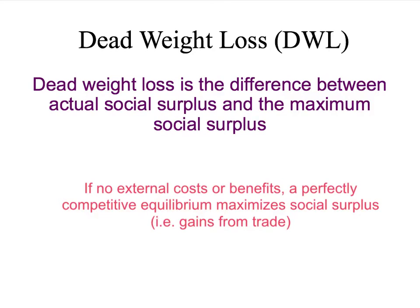In today's example, we're going to start with a simple case where there won't be any external costs or benefits, so our point of comparison is the perfectly competitive equilibrium. Because the perfectly competitive equilibrium maximizes social surplus, we know that anything else will reduce it — any interference in the market leads to a deadweight loss. We'll look at how a government policy creates a deadweight loss and who wins and loses.